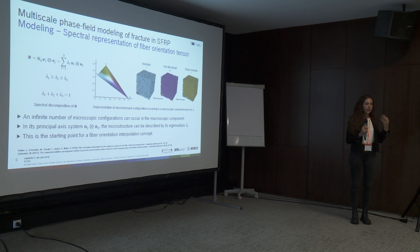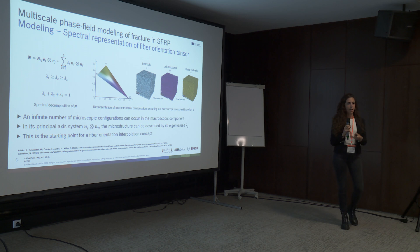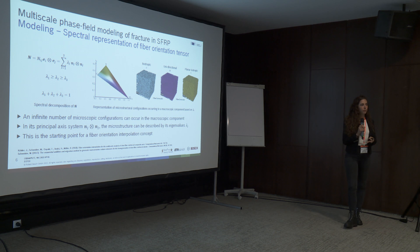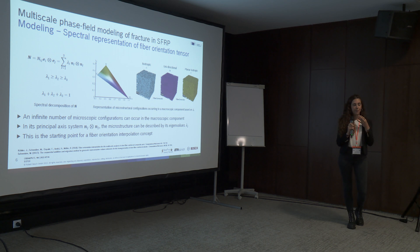Once we have the microstructure characterized, we have the fiber orientation tensor — a second order tensor — and we can perform a spectral decomposition to obtain the eigenvectors N and eigenvalues lambda. These lambdas are related by a mathematical constraint: they must sum to one. So out of three eigenvalues we can eliminate one, keeping just two degrees of freedom: lambda 1 and lambda 2.